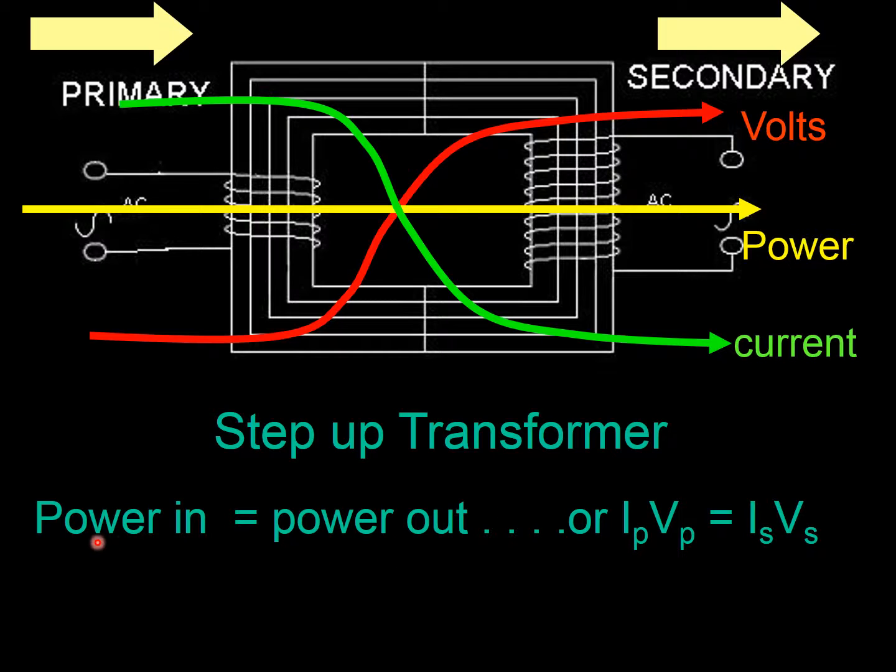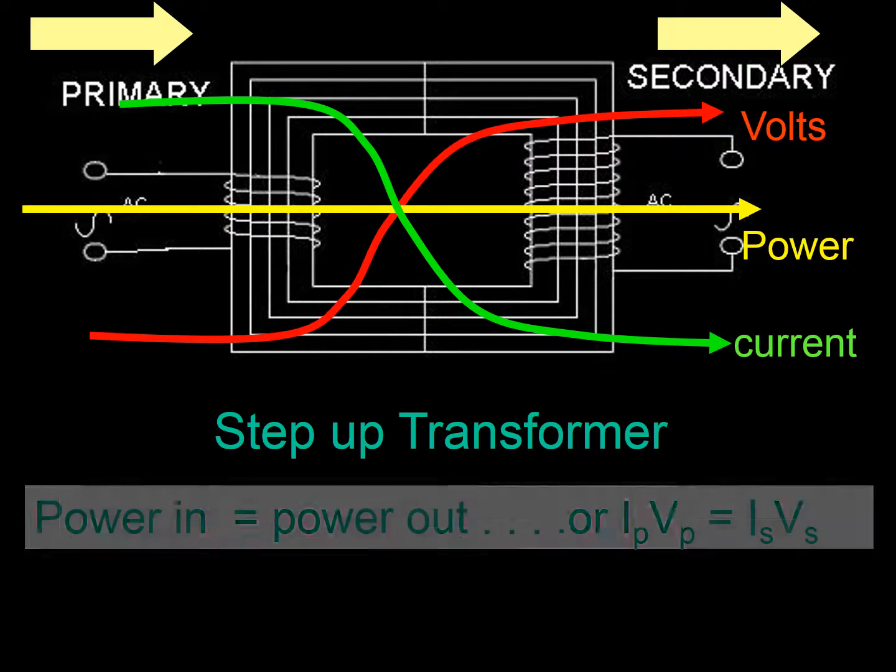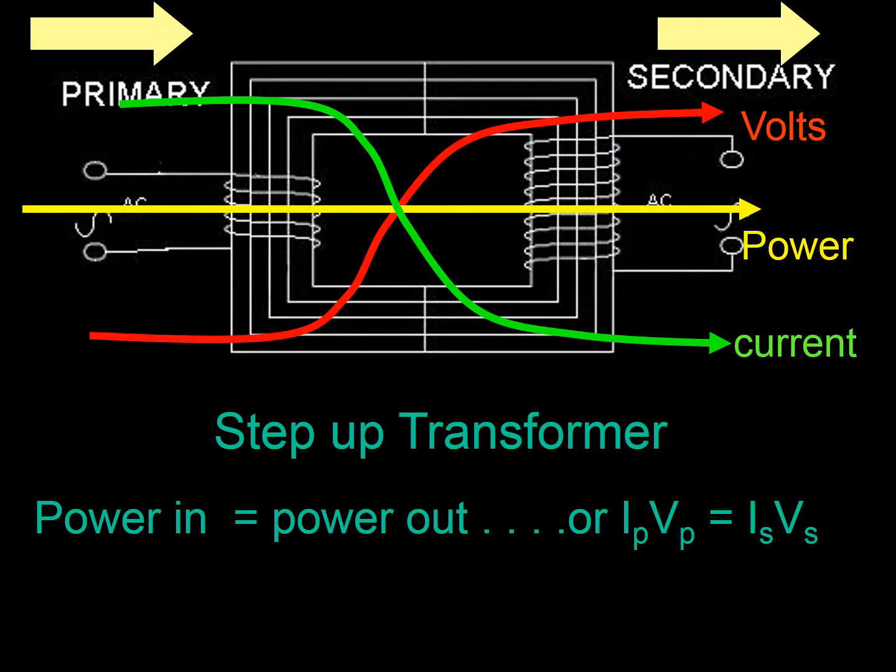Now you can represent the same thing, power in, power out, as IPVP, which is the current on the primary times the voltage on the primary, which is equal to the current on the secondary and the voltage on the secondary, all multiplied together. That's a really key equation that we'll be using a lot.